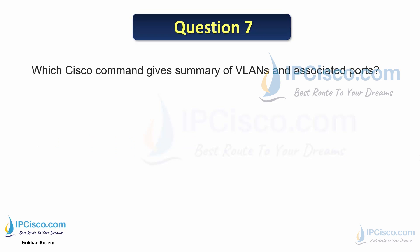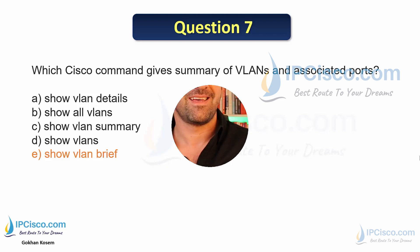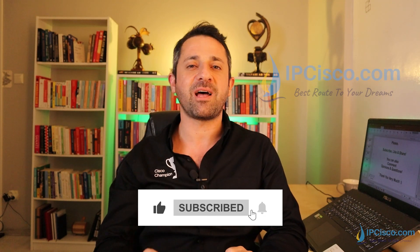Question 7: Which Cisco command gives a summary of VLANs and associated ports? The answer is 'show vlan brief' — you will use this command frequently. We have finished our virtual LAN lessons and questions. After this lesson, you will be ready to solve all VLAN questions. In the following lesson, we will focus on other details of virtual LANs. If you liked this video, please like, share, and subscribe to support our channel. Good luck!